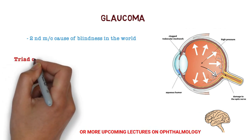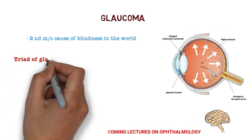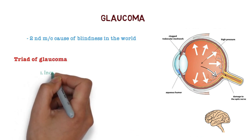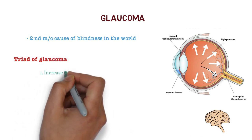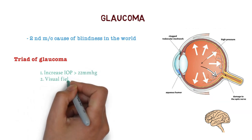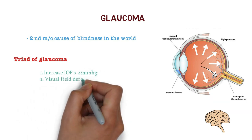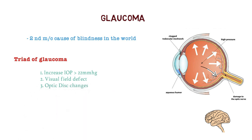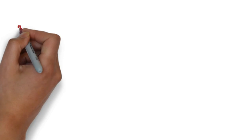There is a triad of glaucoma. In this disease there is increased intraocular pressure — more than 22 mmHg — there is visual field defect, and there are optic disc changes. These are the triad of glaucoma, and at least two out of these three features must be present.